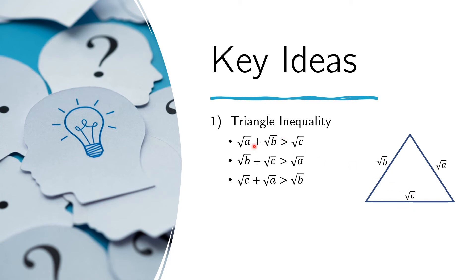So if we add this side and this side, the result must be greater than the third side. The same is the case for the other two combinations of sides — each pair must sum to more than the remaining side. That is the key theorem we need to remember.